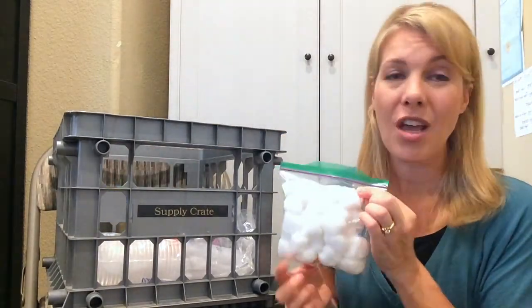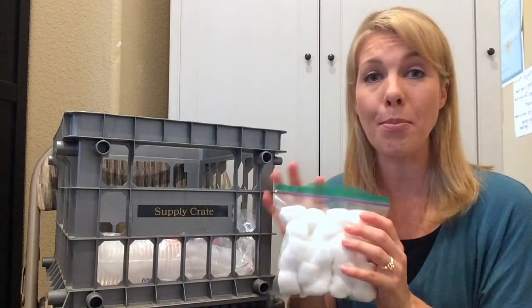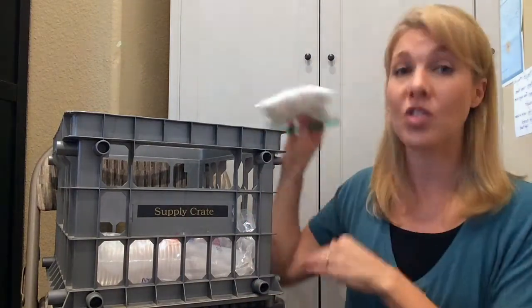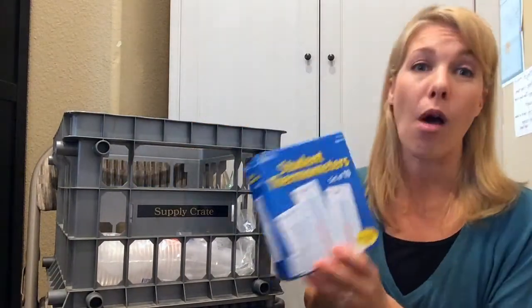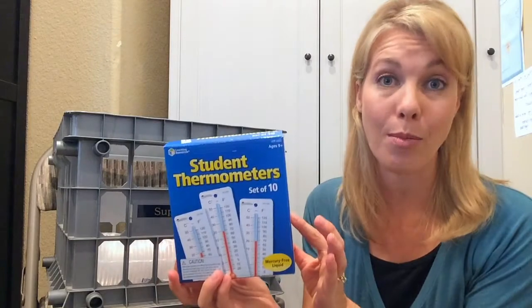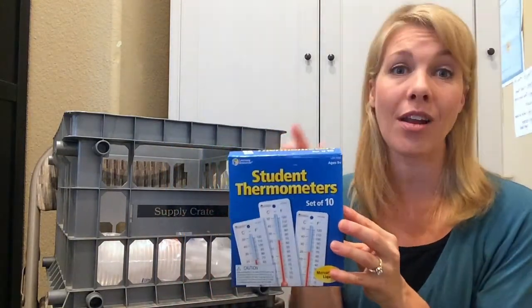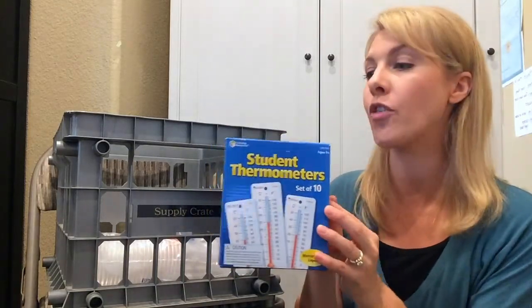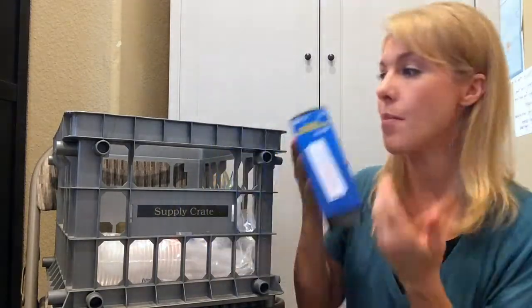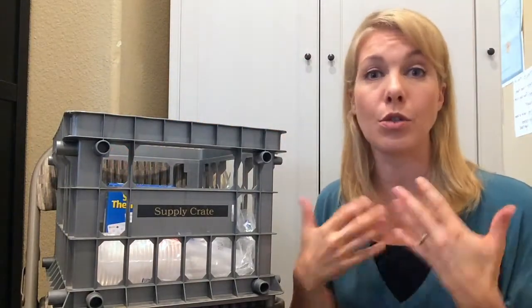Also cotton balls - we usually have cotton balls at home but sometimes they get used up, so I pulled out what we needed and stuck them in here. One of the other things we needed was thermometers. Several of my kids needed thermometers this year, so I went ahead and purchased these on Amazon. I'll leave a link down below if you want these thermometers because they're working really well for us.